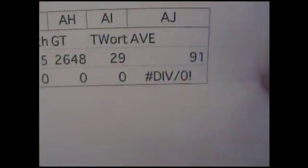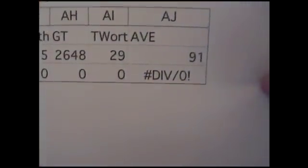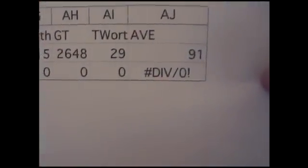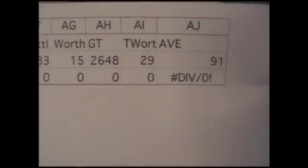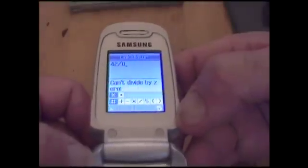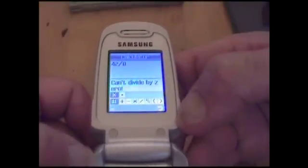Here's one I got a kick out of — the Excel spreadsheet. When you ask it to divide by zero, you get a message which says "division by zero factorial." And since zero factorial is equal to one, that's kind of an unusual error message. The calculator in our Samsung cell phone is the most straightforward — it simply tells us that it can't divide by zero.